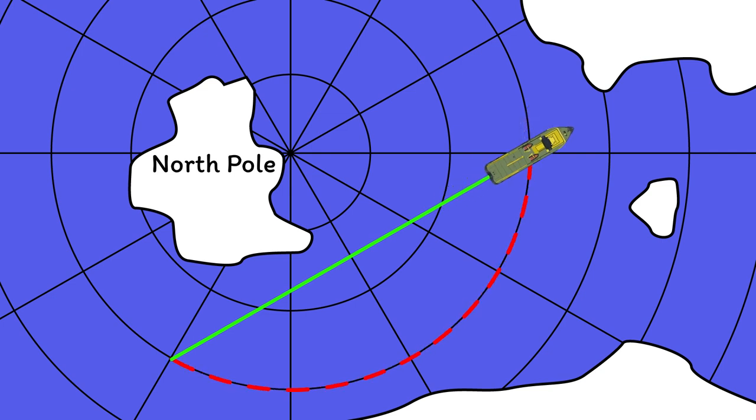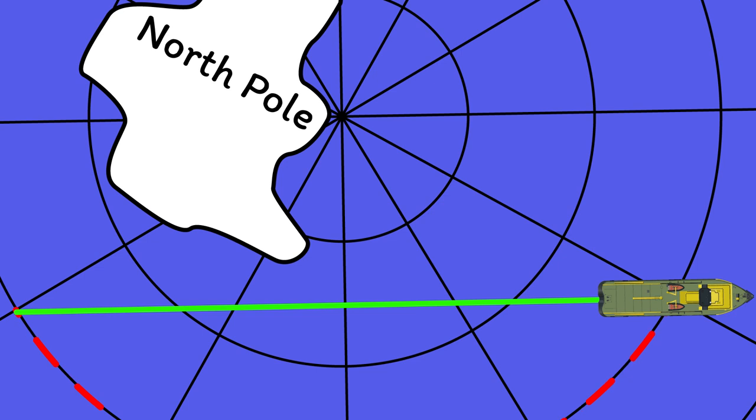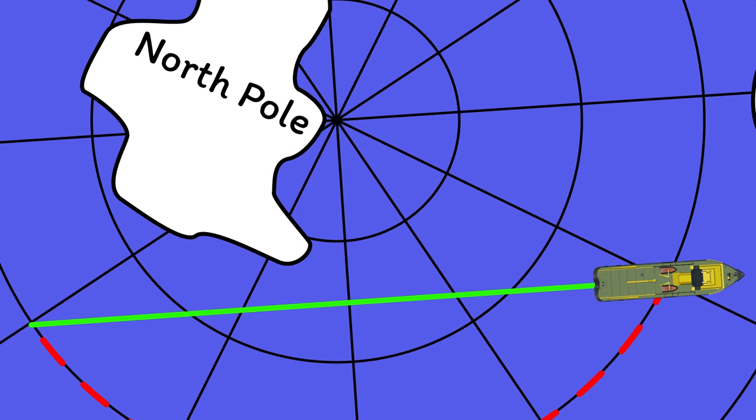As the parallels of longitude all converge, the great circle track crosses each one at a different angle, indicating that your compass course would need to constantly change.